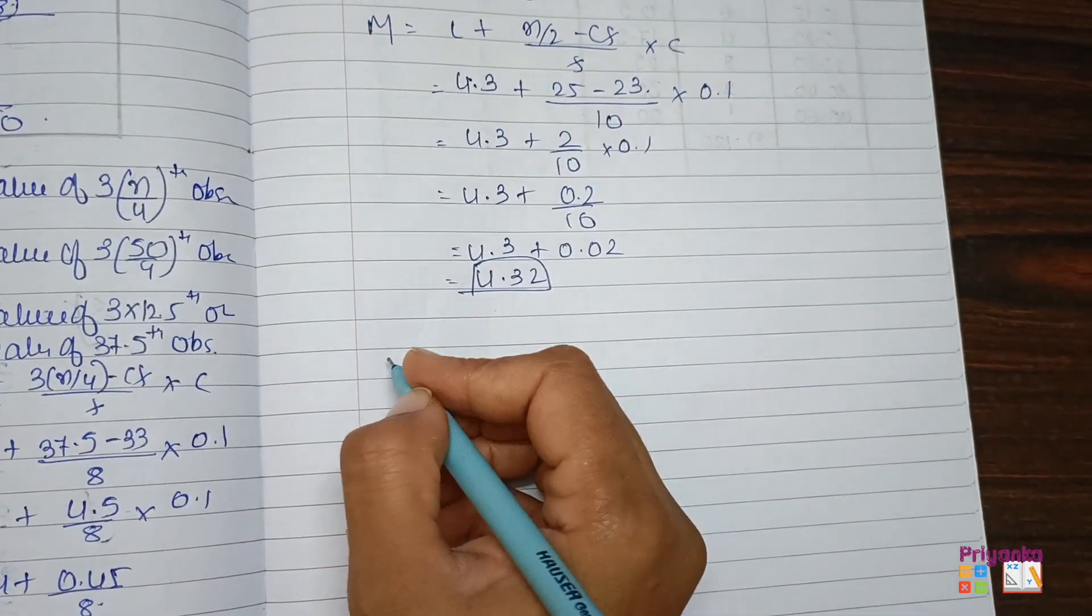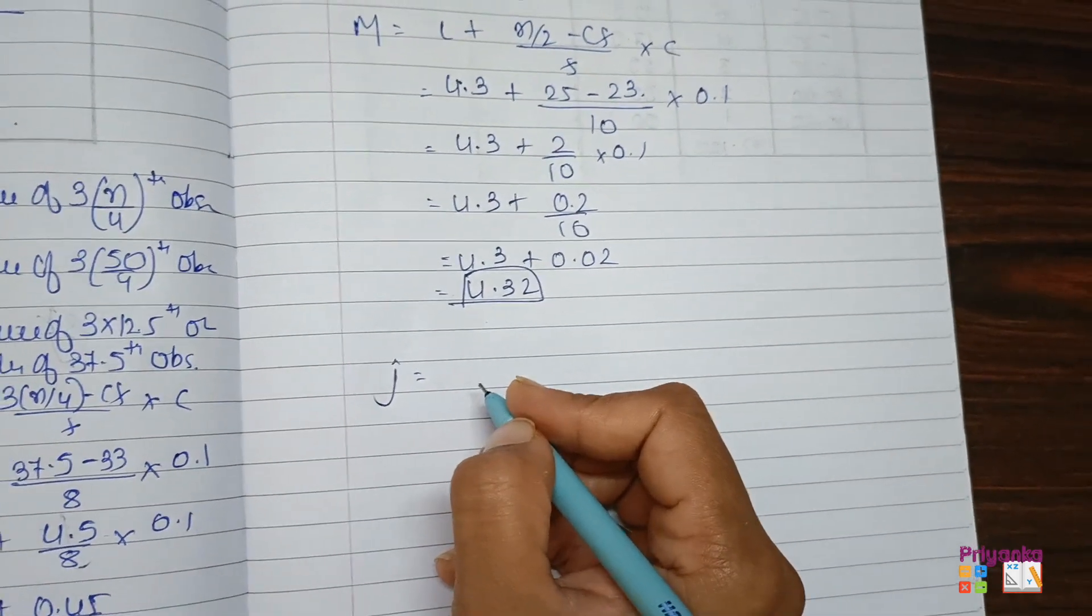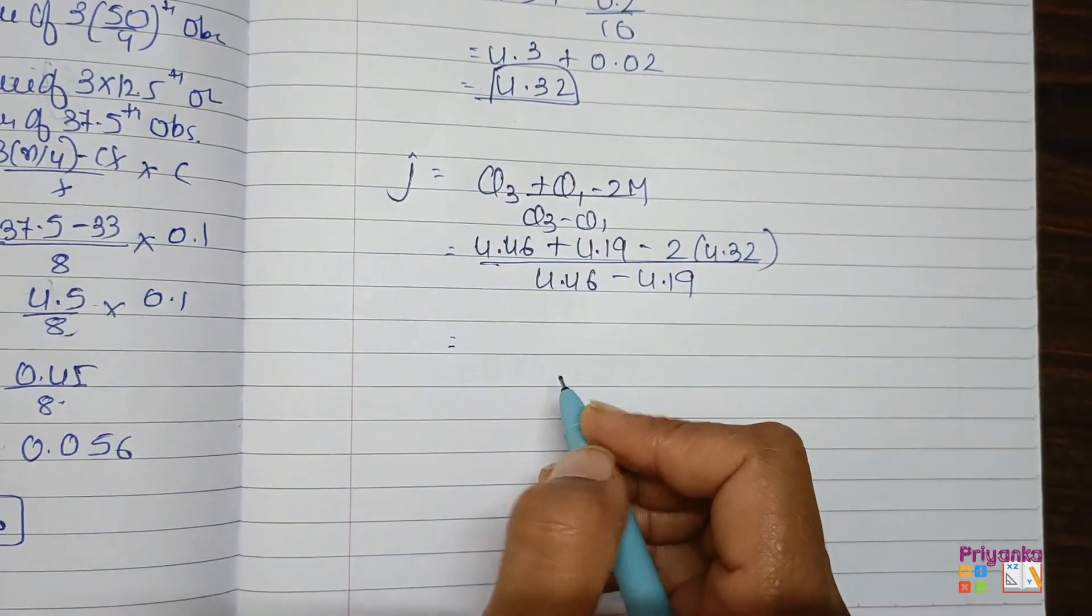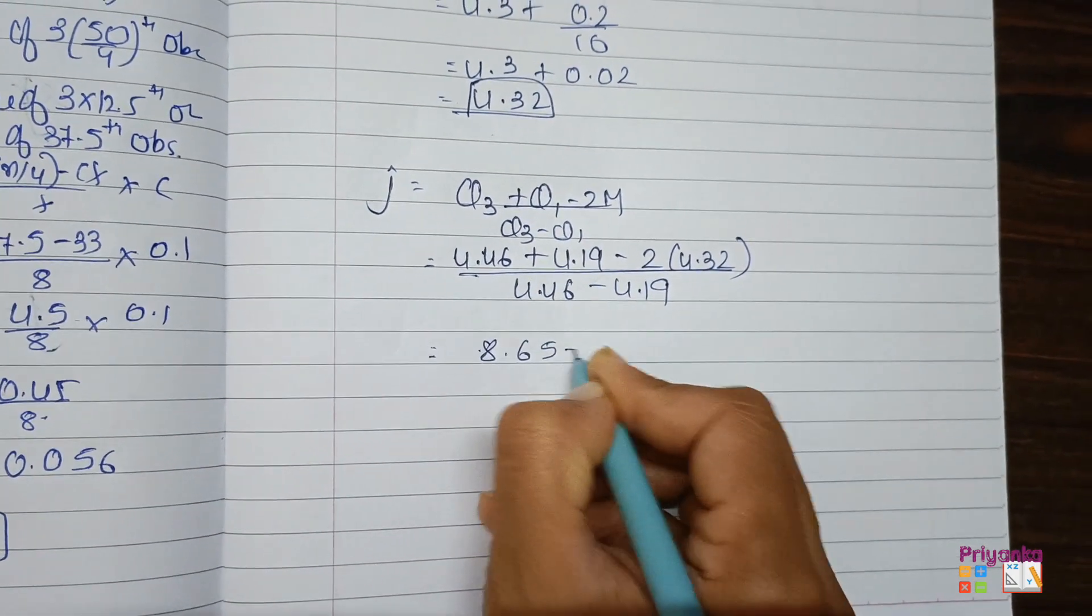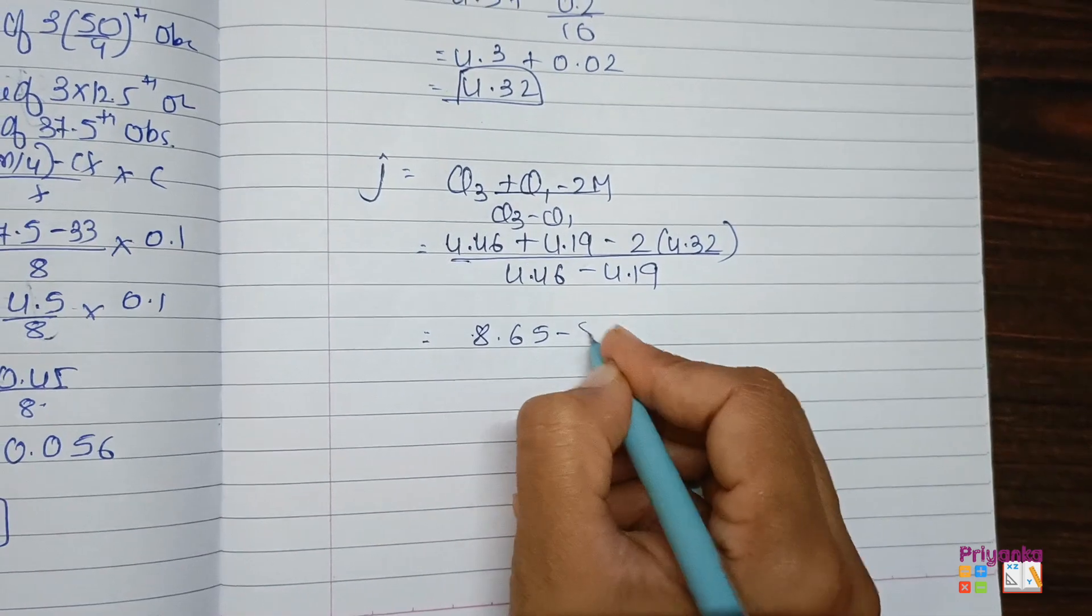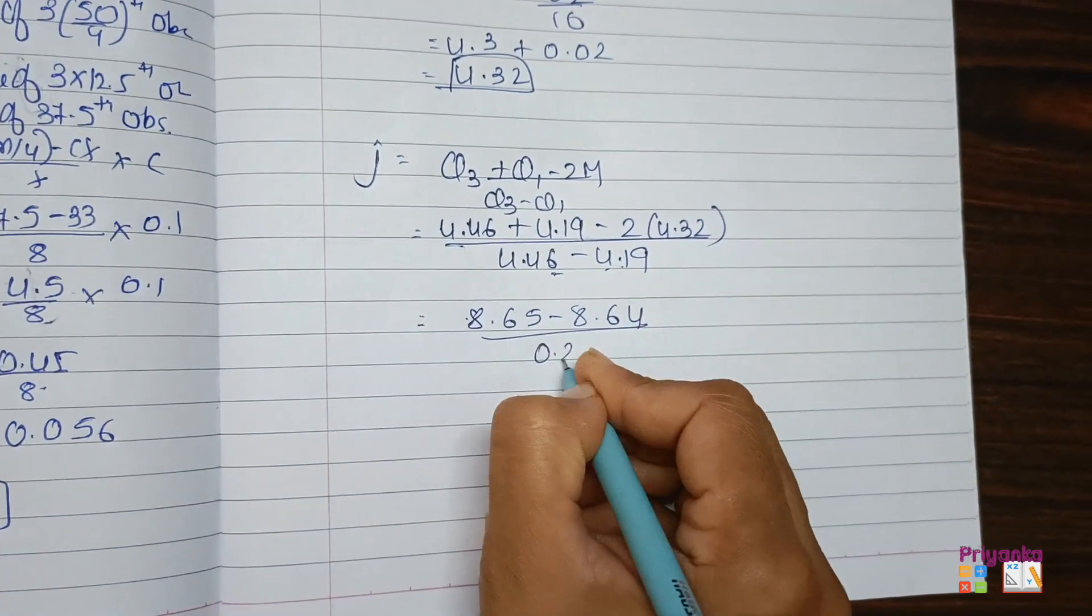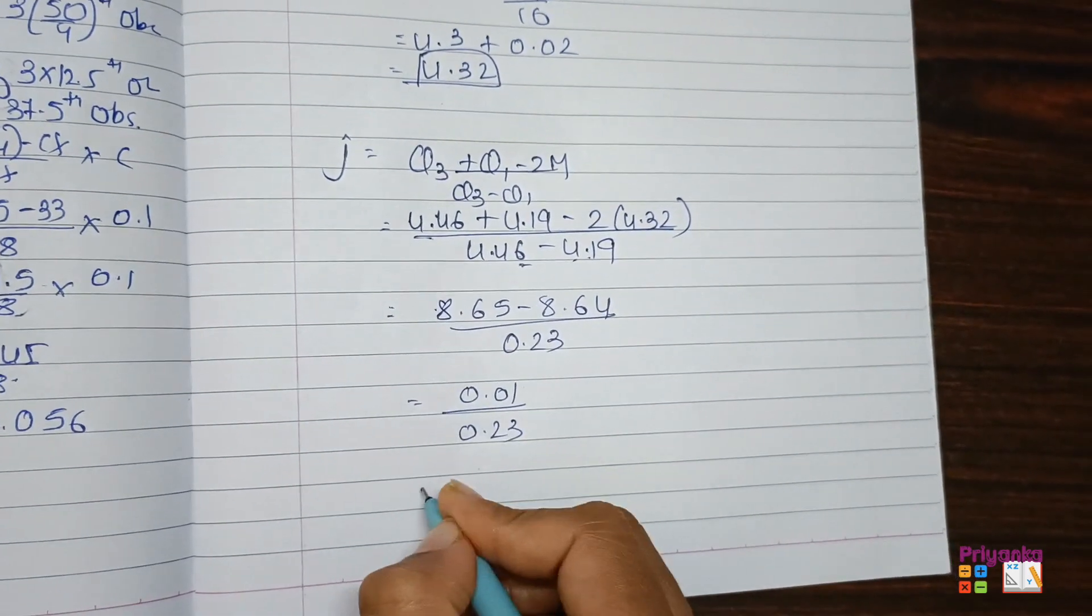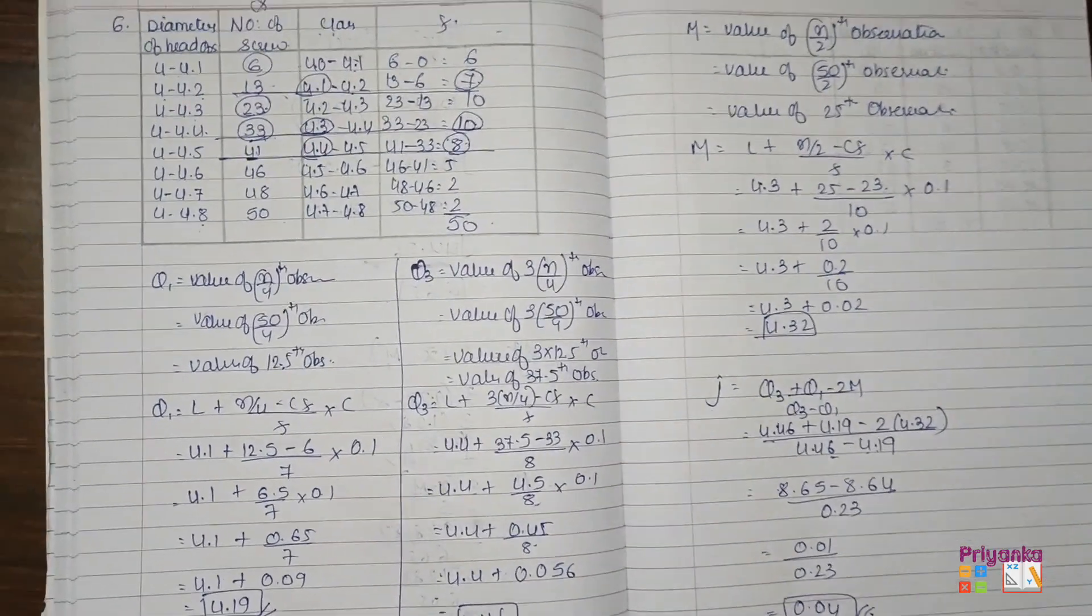So all three informations are ready, Q1, Q3, and median. Now we'll keep the Bowley's method coefficient of skewness, as the question is asking directly coefficient of skewness. Q3 plus Q1 minus 2 median upon Q3 minus Q1. Here I get all the value in the formula. The addition of this will be 8.65 minus the multiplication is 8.64, divided by the subtraction of this 0.23. That is 0.01 divided by 0.23, and the answer is 0.04. Here we complete the sixth question, moving to the next seventh.